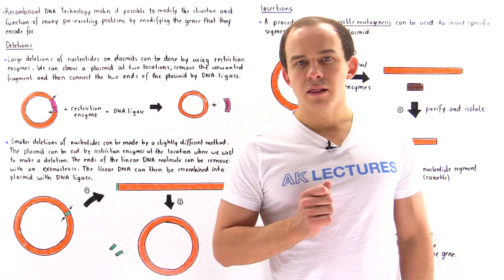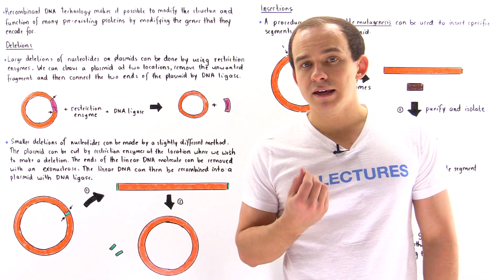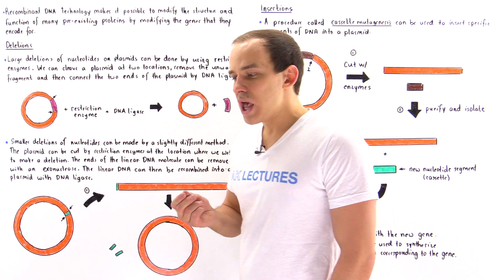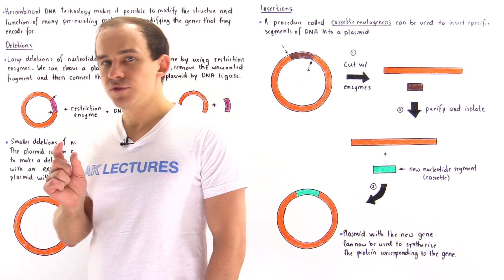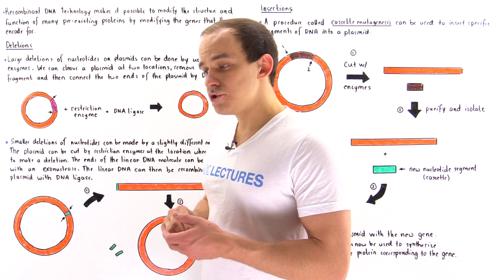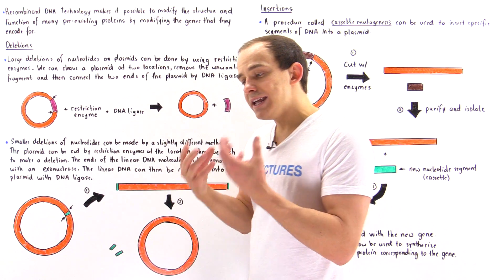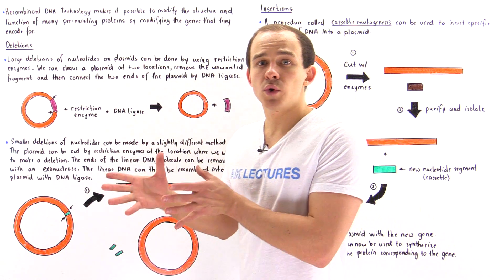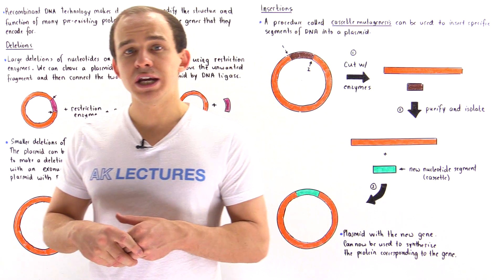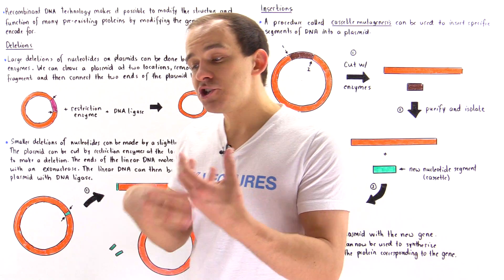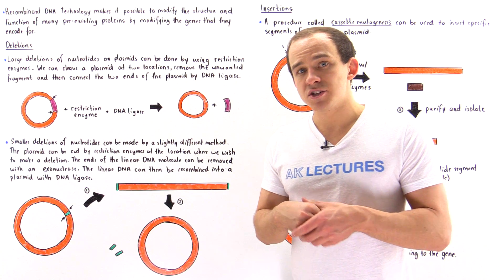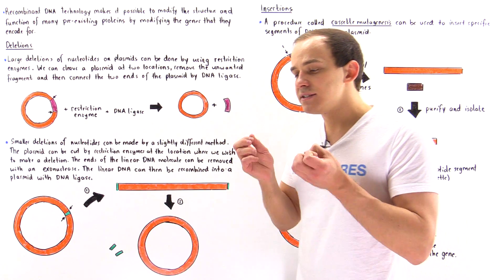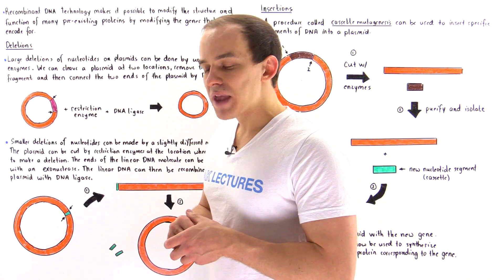Recombinant DNA technology gives us the ability to modify and change pre-existing genes. By changing the sequences of nucleotides in a pre-existing gene, we can in turn change what the sequence of amino acids is in the protein produced by that gene. And in certain cases, by changing the sequence of amino acids, we create brand new proteins that contain brand new functions.